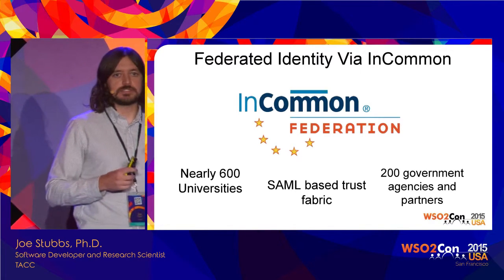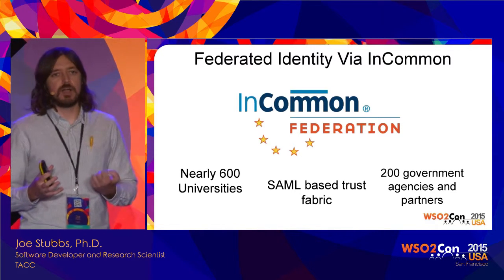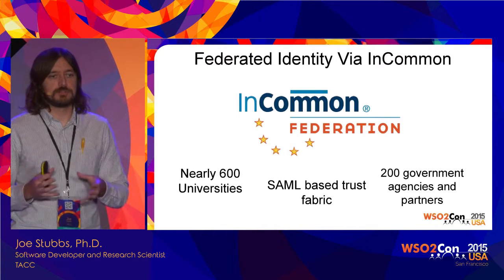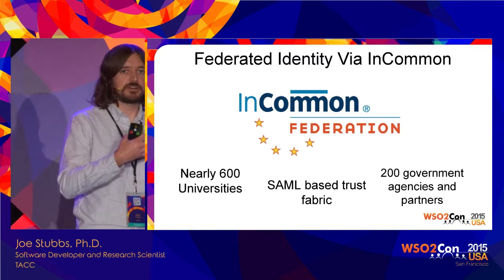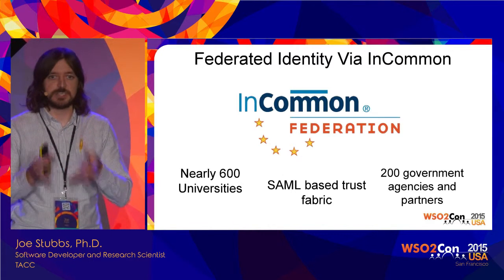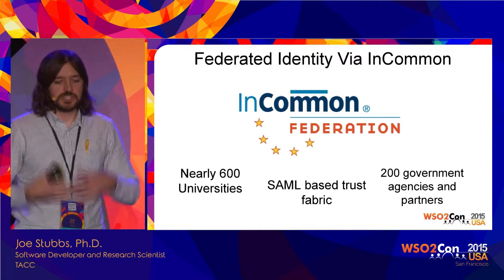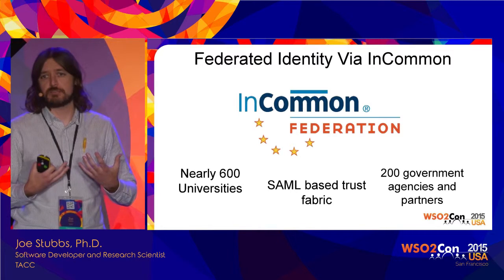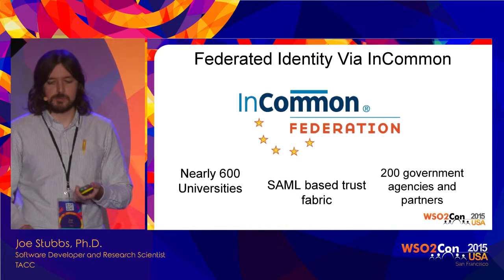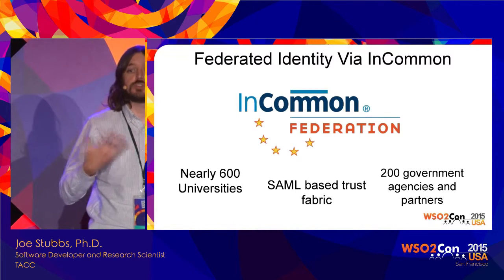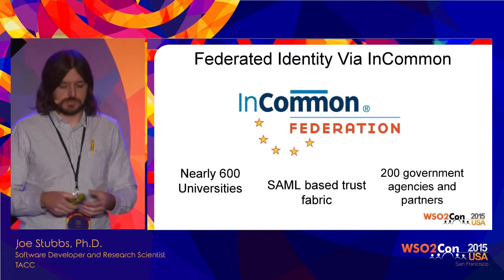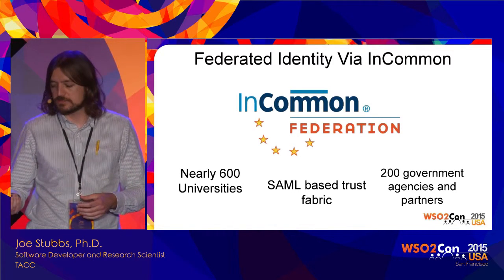InCommon is a SAML-based trust fabric of nearly 600 universities and a couple hundred additional government agencies and partners — a group of organizations that have agreed to share their identity information with each other. The mechanism for sharing is SAML-2. Each identity provider publishes metadata about the kinds of identity information they're able to provide, and as a service provider in the SAML parlance, you publish metadata about the kinds of identity information you wish to consume. This public metadata is then used with standards to federate identity across the federation.